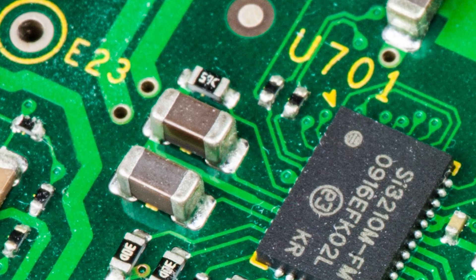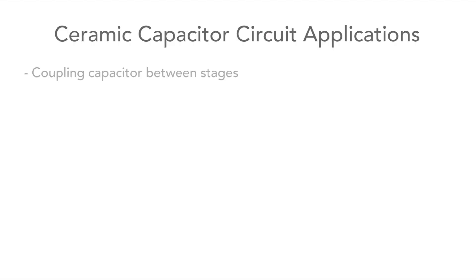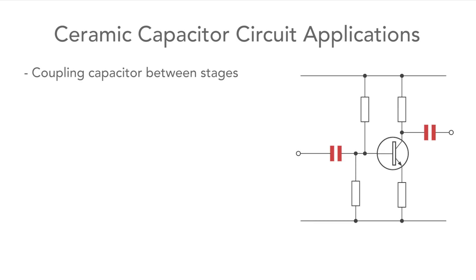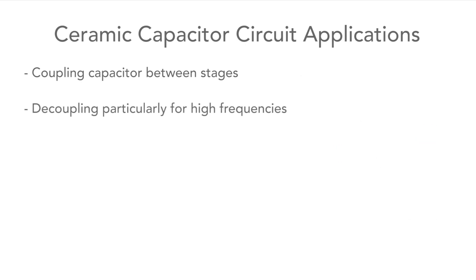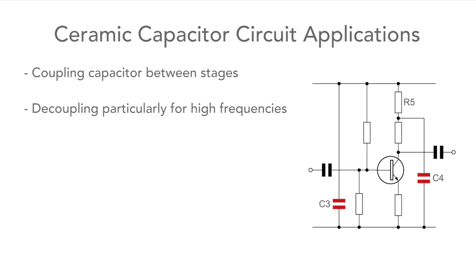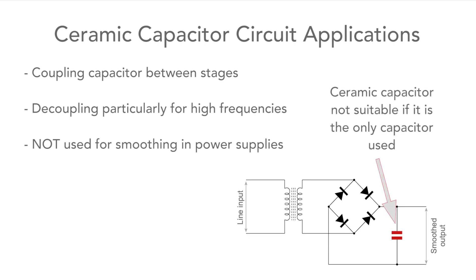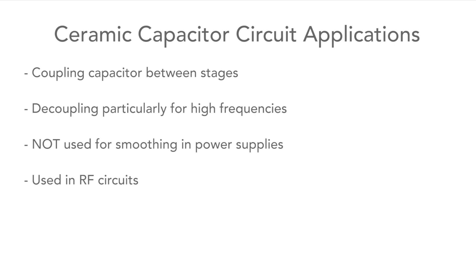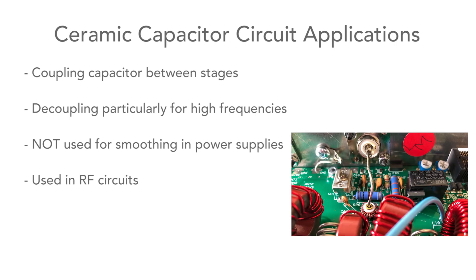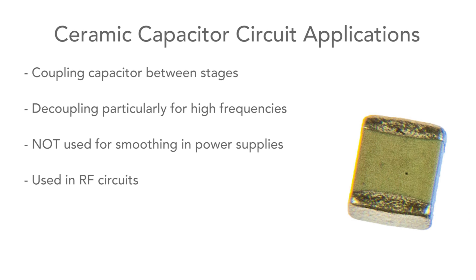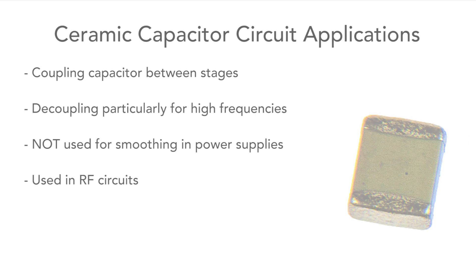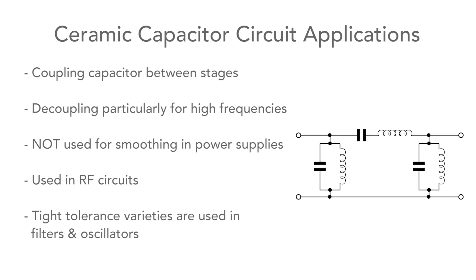Ceramic capacitors find many uses in circuits. They're widely used as coupling capacitors between stages of analog designs, and for decoupling — particularly for removing high frequencies and transients, owing to their value range and high frequency performance. They aren't used for smoothing because the capacitance levels aren't high enough, but they are used in many RF circuits, especially surface mount ones, as they offer very low values of unwanted inductance. The high-tolerance types are also used in filter and oscillator circuits.